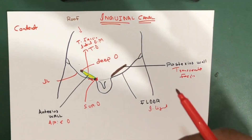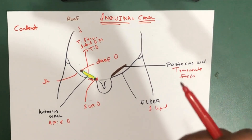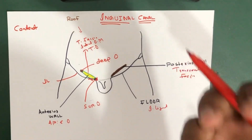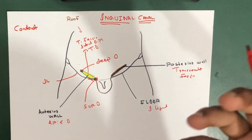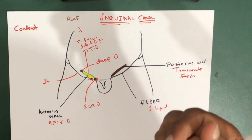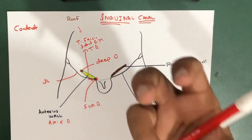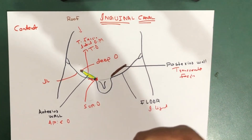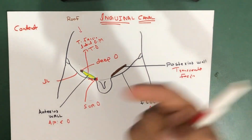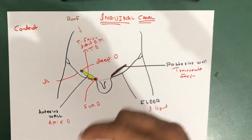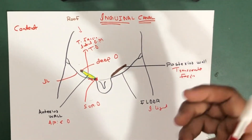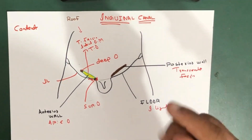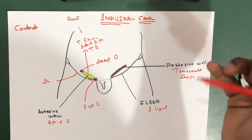The spermatic cord refers to a collection of vessels, nerves, and ducts that run to and from the testes. These are surrounded by fascia forming a cord-like structure, hence the name spermatic cord. The round ligament is only present in females — there is no spermatic cord in females.